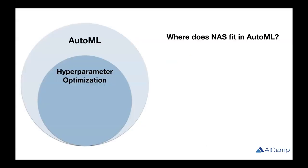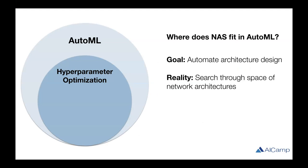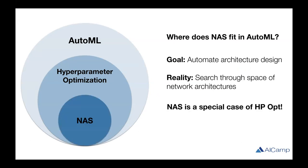You might be wondering where NAS fits into the larger picture of AutoML. Hyperparameter optimization is a big component of AutoML, and the stated goal of NAS is to automate network design — but in reality, it really just involves searching through a larger space of possible architectures. Our view is that NAS is a special case of hyperparameter optimization.